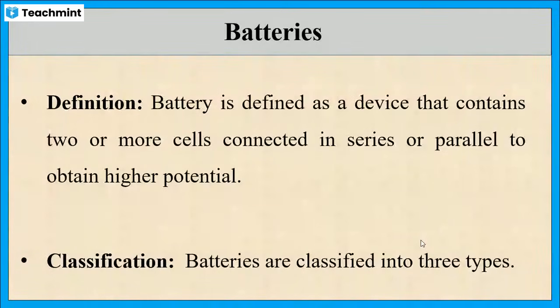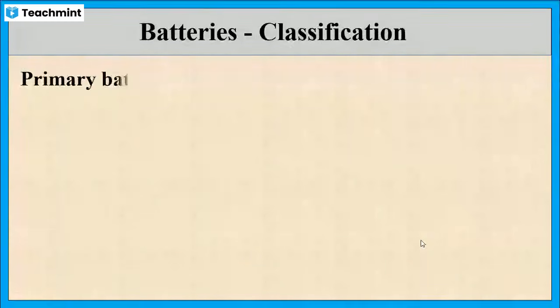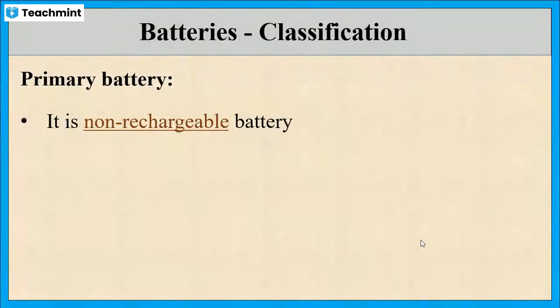First, primary batteries: it is a non-rechargeable battery, meaning we cannot recharge this kind of battery. The electrical energy can be obtained from chemical energy only as long as the active materials are present.